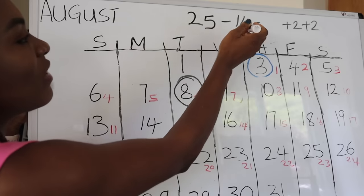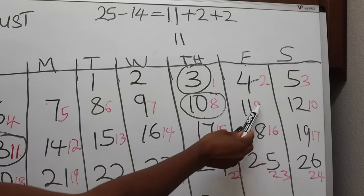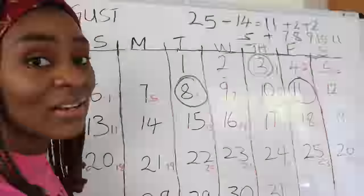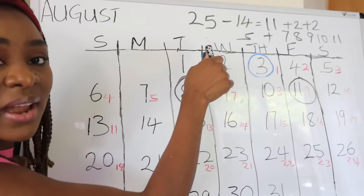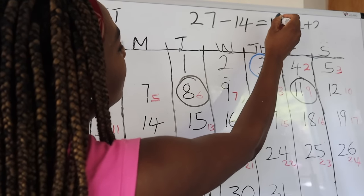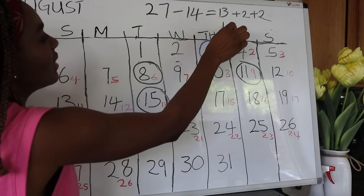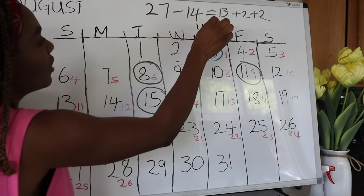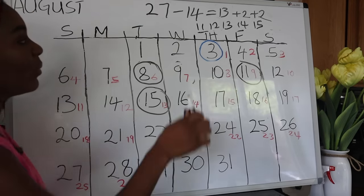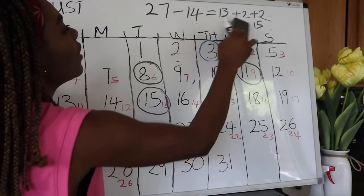For a 25-day cycle: 25 minus 14 equals 11, so day 11 is your ovulation day. Add the two days in front of 11 and the two days after 11 for your fertile window, then add five extra days for the full fertile window. For a 27-day cycle: 27 minus 14 equals 13, so day 13 is your predicted ovulation day. The two days before are days 11 and 12, and the two days after are days 14 and 15. Add five extra days to get the full fertile window.